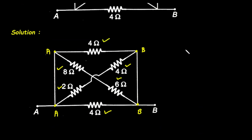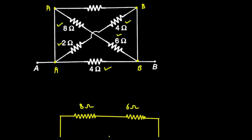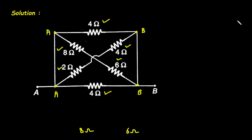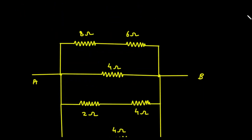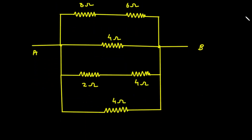Now we will count how many resistances are here — there are 6 resistances on each side. So if we simplify this network, the circuit will look like this, and we can easily simplify it.